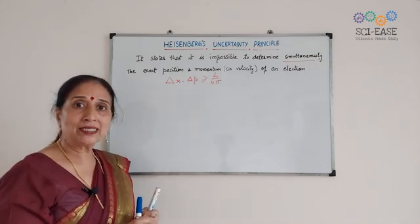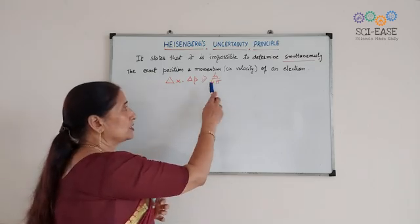There must be some error, and that error is either equal to h by 4 pi or greater than h by 4 pi. Here, h is Planck's constant; 4 is also a constant, and pi you know. This is the uncertainty in position and this is the uncertainty in momentum. We know that momentum px is equal to mvx. Substituting the value: delta x into delta(mvx) is greater than or equal to h by 4 pi.